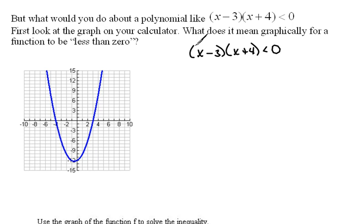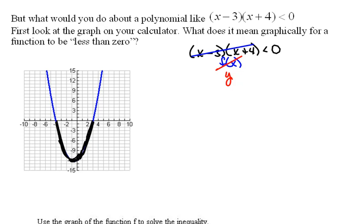This expression is my function f of x, and I'm looking at where f of x is less than 0. Since f of x is just a fancy way of saying y, we're really asking where the y values are less than 0 — that is, below the x-axis. Those values start at negative 4 and end at 3, so I write that as the interval from negative 4 to 3. Because this is a strict inequality with no equal sign, both ends get a parenthesis.